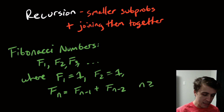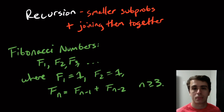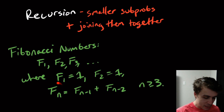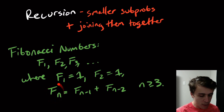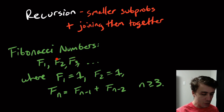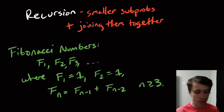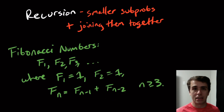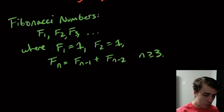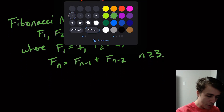What this is saying is that whatever value you want to calculate next is the sum of the previous two. So F(3) is going to be 2, because it's 1 plus 1. F(4) is going to be 3 — that's 2 plus 1. F(5) is going to be 5 — that's 3 plus 2. Then it goes 8, 13, 21, and so on.